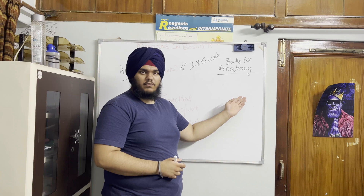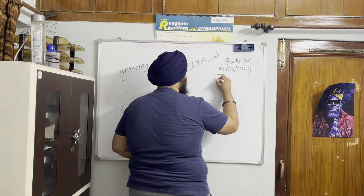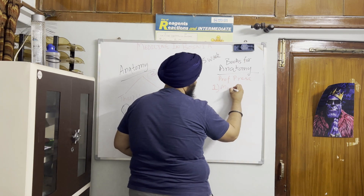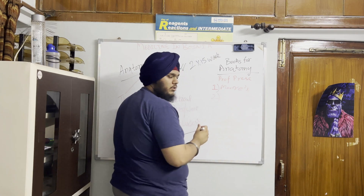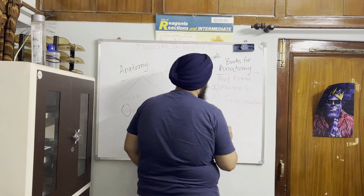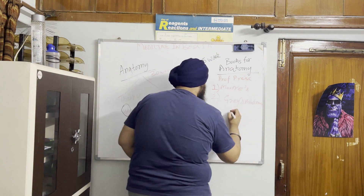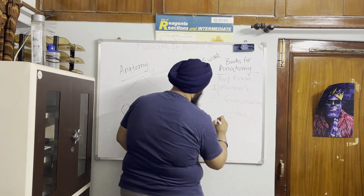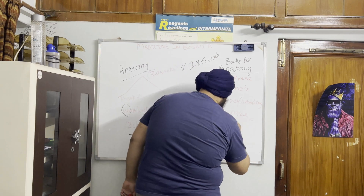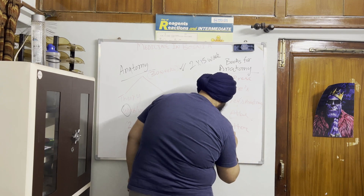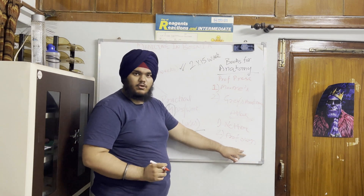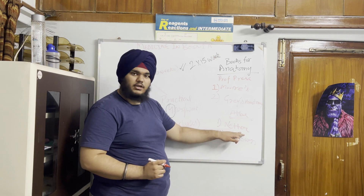We will talk about the books required for the anatomy subject. The professor has prescribed Borr's Anatomy, or you can also refer to Gray's Anatomy. For the atlas, the professor has asked us to either use Netter's Atlas or the professor's own atlas. It is not a compulsion that you have to buy the professor's own atlas — you can use Netter or any one of your choice.